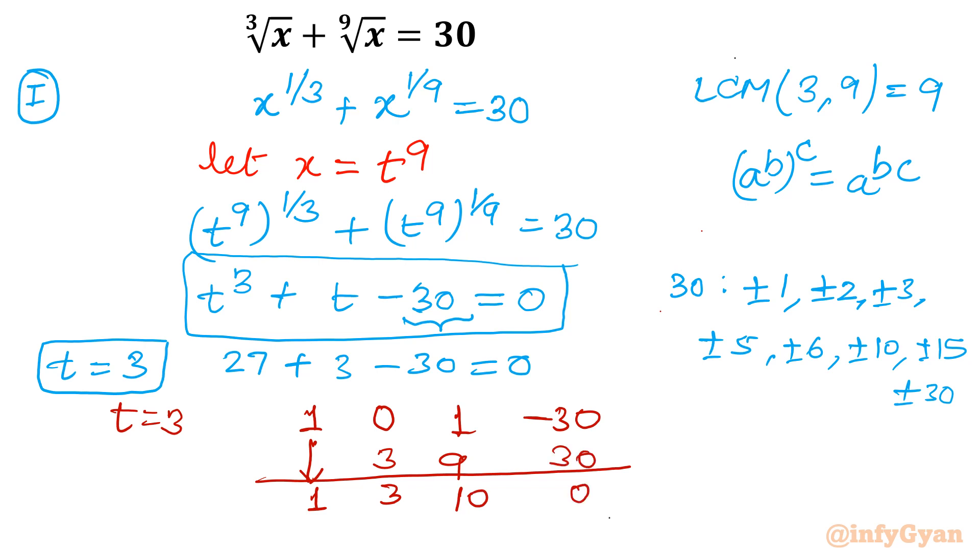So factors of the given cubic equation are now known. Factors are t minus 3 because t equal to 3 is one root, and second one is t square plus 3t plus 10 equal to 0. Now I am going to solve this quadratic equation for our solution.